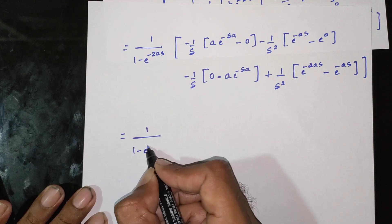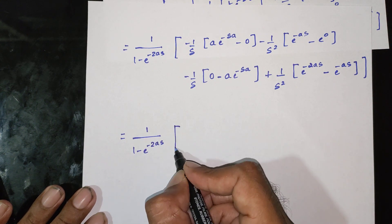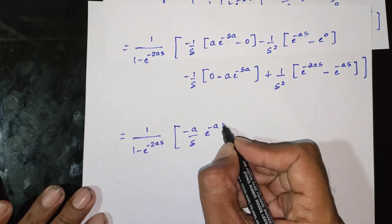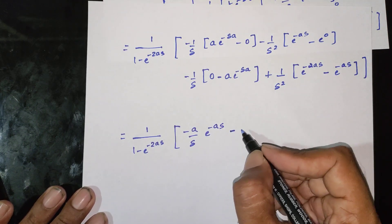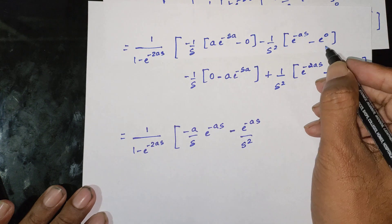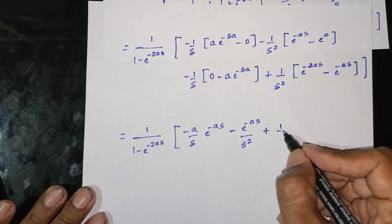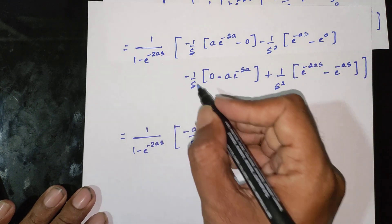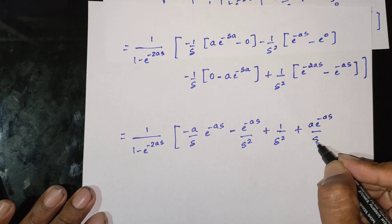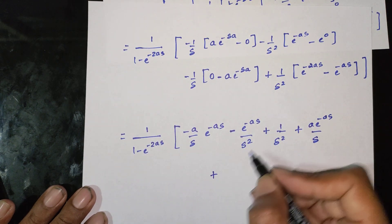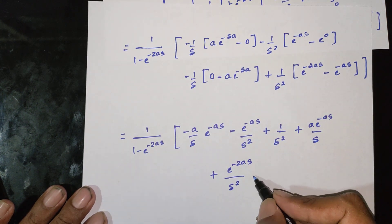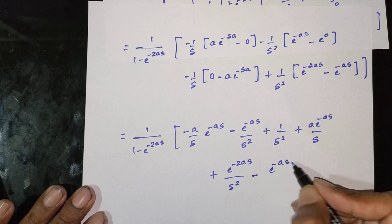Continuing the substitution: minus a by s times e power minus as, minus 1 by s squared times e power minus as, plus e power 0 equals 1, so plus 1 by s squared. Then the next term: minus 1 by s times (2a minus t) e power minus st evaluated gives plus e power minus as by s. Plus 1 by s squared times e power minus 2as, minus 1 by s squared times e power minus as.